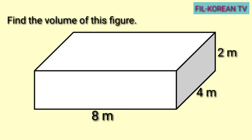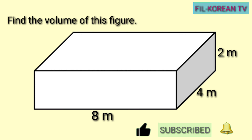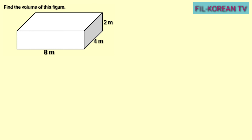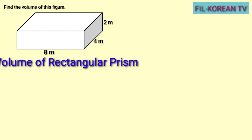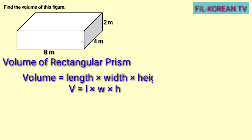Now, let's find the volume of this figure. Ang tawag sa figure na ito ay rectangular prism. Meron itong length na 8 meters, width 4 meters, at height na 2 meters. Sa pagkuha ng volume ng rectangular prism, meron tayong ginagamit na formula. At ang formula sa pagkuha ng volume ng rectangular prism ay volume equals length times width times height.